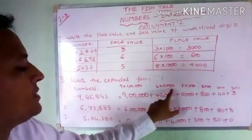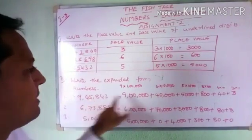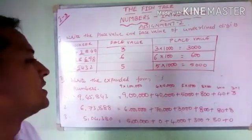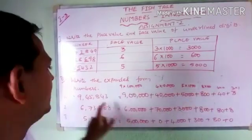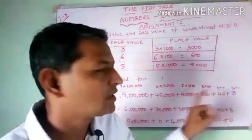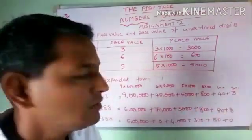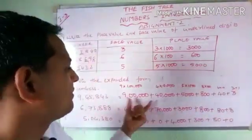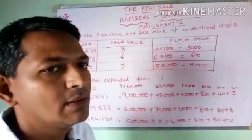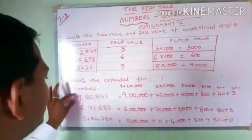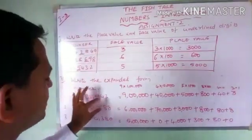And 4 into 10,000 is 40,000. Here 5 is in the 1000s place, so 5 into 1000 is 5000. And 8 is in the 100s place, so 8 into 100 is 800. 4 is in the 10s place, so 4 into 10 is 40. And 3 is in the 1s place, so 3 into 1 is 3. So 9 lakhs + 40,000 + 5000 + 800 + 40 + 3 is the expanded form of this number.